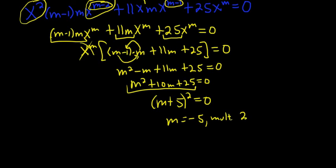So whenever you have a Cauchy-Euler differential equation and you have a repeated real root, the answer is c1x to the m plus c2x to the m ln x. So in this case, m is negative 5, and we just plug everything in and we're good.